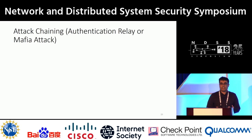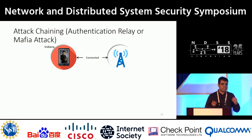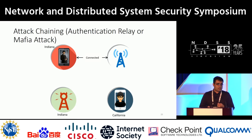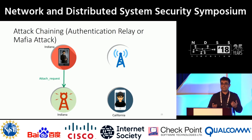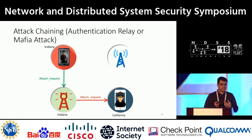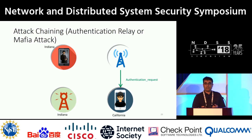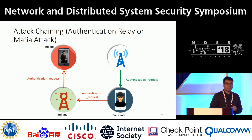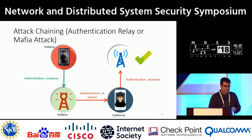The next technique is attack chaining, combining multiple attack steps — also called the authentication relay or mafia attack. The victim is in Indiana, connected to the core network. An adversary sets up a malicious eNodeB in Indiana and a malicious UE in California. The malicious eNodeB broadcasts high signal power, forcing the victim UE to disconnect and send an attach request, which is relayed to the malicious UE in California, which then sends an attach request to the original network. The malicious UE receives the authentication challenge but lacks the cryptographic master key. It relays the challenge to the victim UE to get it solved, and thus the malicious UE connects from California while impersonating the victim located in Indiana.